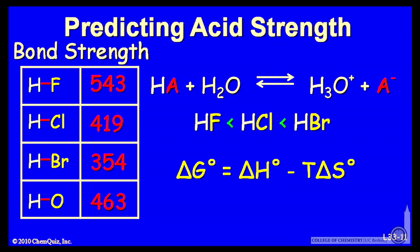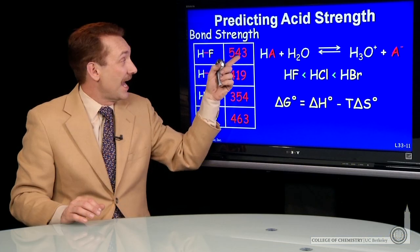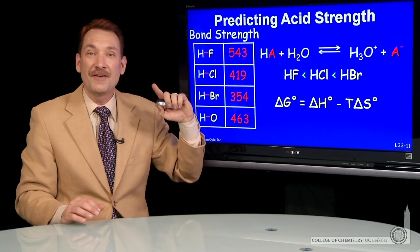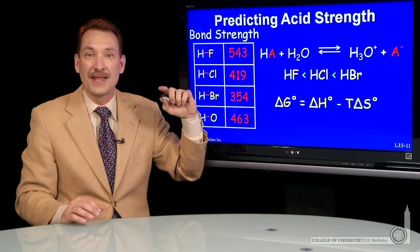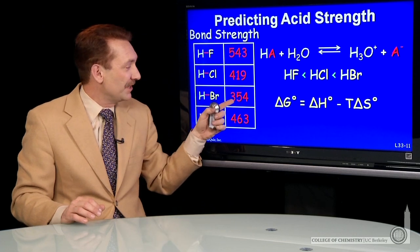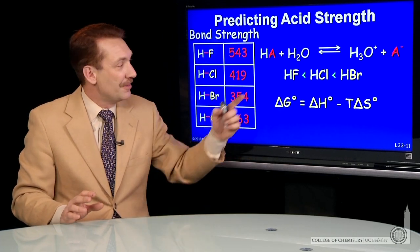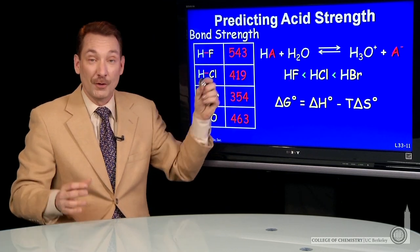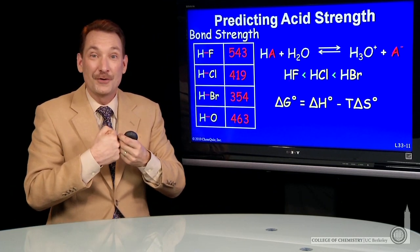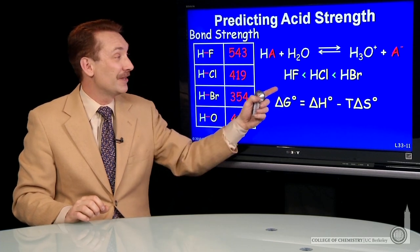Those acid strengths go as the bond strength. HF, it takes 543 kilojoules to break that bond, where HBr, only 354 kilojoules to break that bond. The stronger the bond, the more tightly the proton is held to the molecule, the weaker the acid.